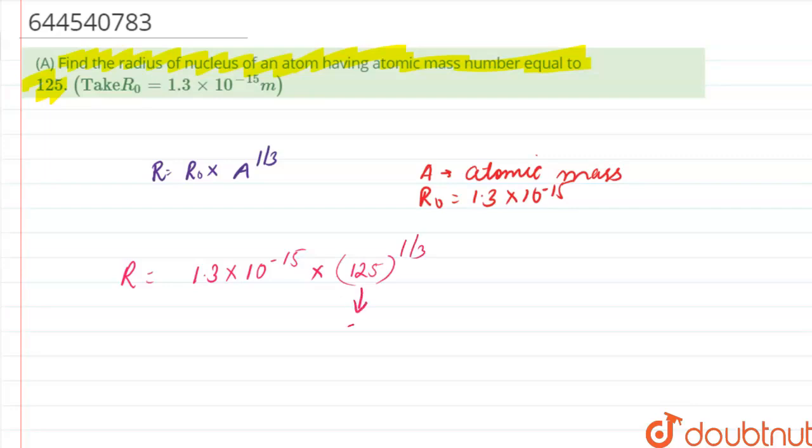So it will be 5 into 10 raised to power minus 15 into 1.3. This comes out to be equal to r.